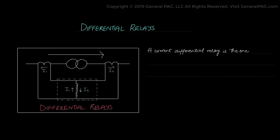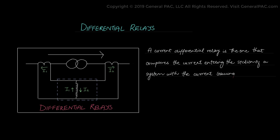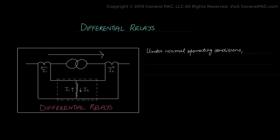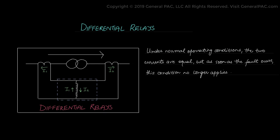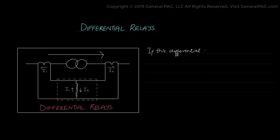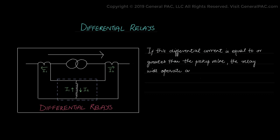The mechanism for a differential relay works as follows. A current differential relay compares the current entering a section of the system with the current leaving the section. Under normal operating conditions, the two currents are equal, but as soon as a fault occurs, this condition no longer applies. The difference between the incoming and outgoing current flows through the operating coil of the relay. If this differential current is equal to or greater than the pickup value or set point, the relay will operate and open the circuit breaker to isolate the faulty section.